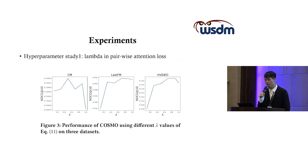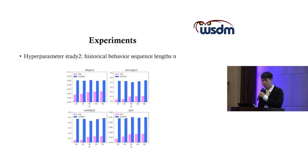Hyperparameter study one is about the lambda in pairwise attention loss. We can see that the peak of the curve is in the middle of zero to one, showing the effectiveness of our pairwise attention loss. Hyperparameter study two is about the historical behavior sequence length n. We can see that it's not the larger n the better. So in order to choose n, we must also consider the efficiency of our algorithm.